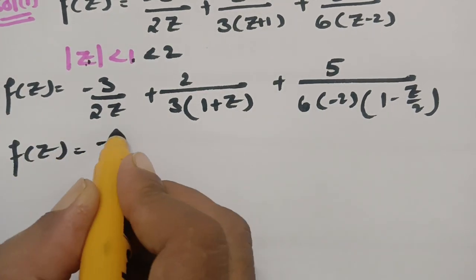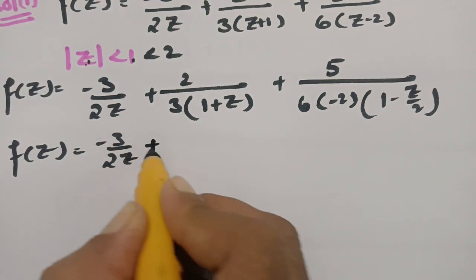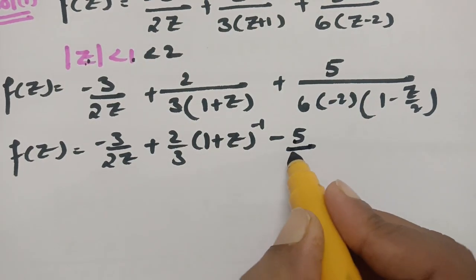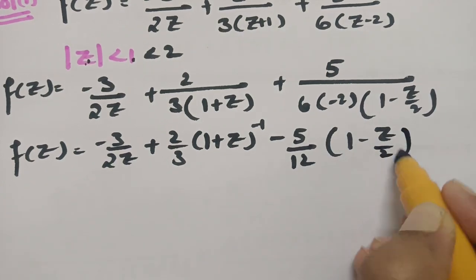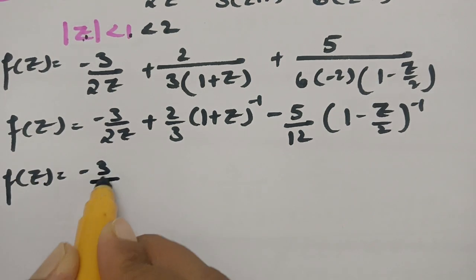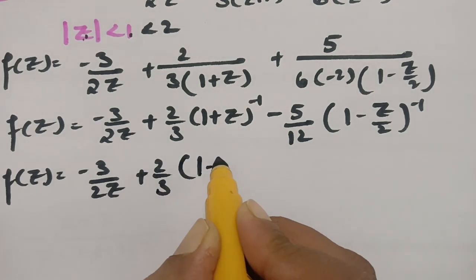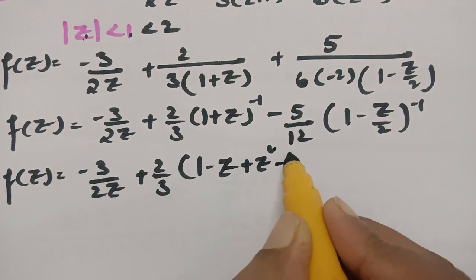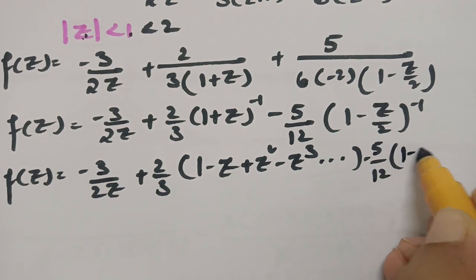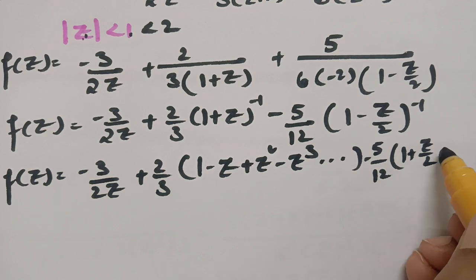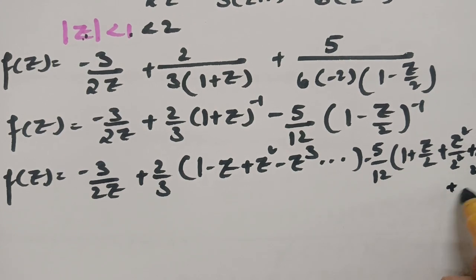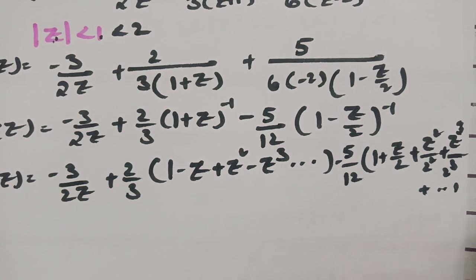So f(z) = -3/(2z) + (2/3)(1+z)⁻¹ - (5/12)(1 - z/2)⁻¹. Expanding: f(z) = -3/(2z) + (2/3)(1 - z + z² - z³ + …) - (5/12)(1 + z/2 + z²/4 + z³/8 + …).